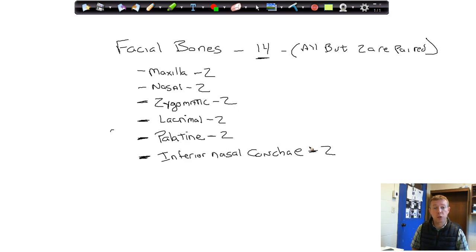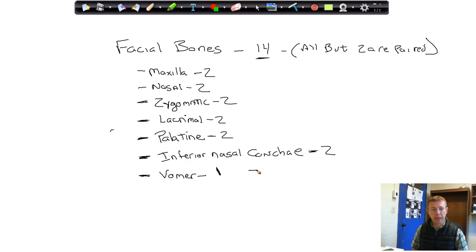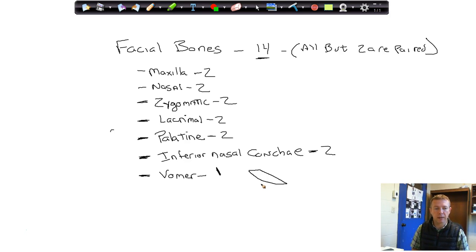So we have two, four, six, eight, ten, twelve paired bones. There are two bones that are unpaired. The first is the vomer, which sits inside the nasal cavity. Literally, the word vomer means plow, and the vomer is shaped like an old-fashioned plow blade you'd drag behind a horse — that's basically what the lateral view of the vomer bone looks like. It sits inside your nose and helps divide the left and right sides of your nasal cavities.